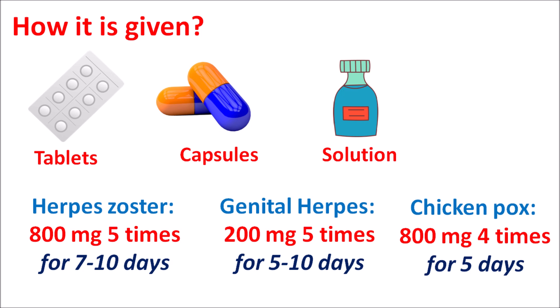To summarize: acyclovir is an acyclic analog of guanosine. It should be initially activated within the infected cell by viral thymidine kinase. Once converted into the monophosphate form, it can be further converted into the triphosphate form by host thymidine kinase. In its triphosphate form, it is incorporated within the growing DNA chain, where it inhibits the activity of DNA polymerase, resulting in inhibition of DNA synthesis.